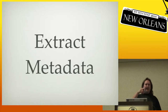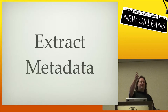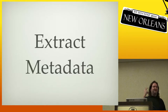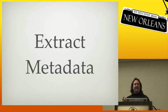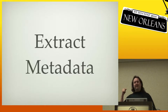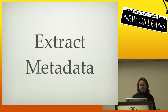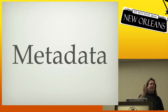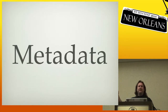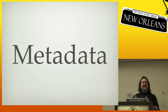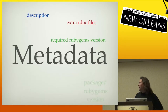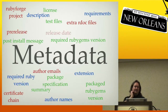A .gem file is really just a tar file. It has two files in it: metadata.gz and data.tar.gz. The metadata.gz is a YAML file and the data is just a list of all the files in the gem. It's a pretty simple and nice format. That metadata in the YAML file — how many people have actually looked at a full Ruby gem specification? There's a lot of stuff in there that most people probably don't realize.